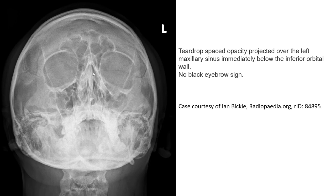Next case with a Water's sinus view, where we can see the signs of orbital fracture with a teardrop sign and opacification of the left maxillary sinus, but no black eyebrow sign.